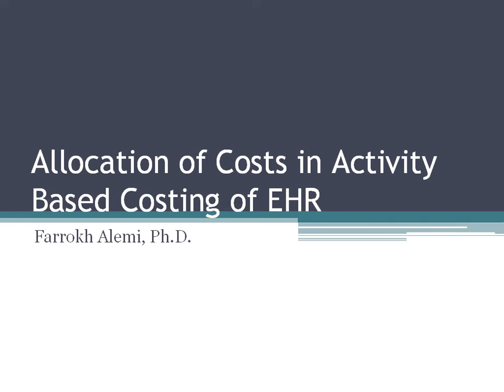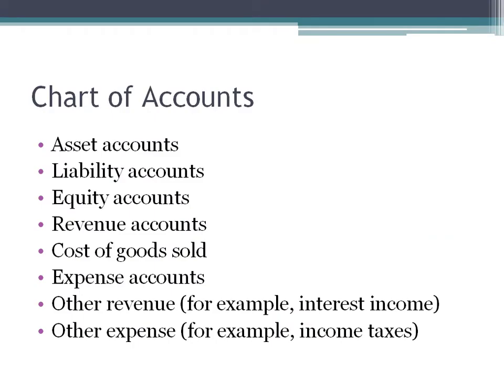This is a presentation by Dr. Alemi about activity-based costing of electronic health records. In this presentation, I show you how cost allocations are made. The most reliable place to start activity-based costing of electronic health records is with a chart of accounts. The accounting department of any organization organizes all transactions into a series of separate categories within the general ledger. These items provide a readily available source of data to start activity-based costing.